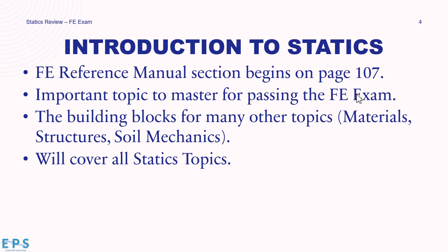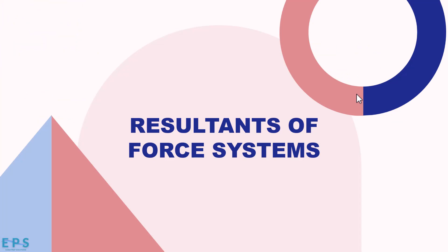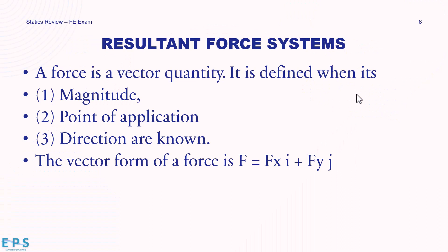We're going to cover all the statics topics here. If you have questions, leave them in the comments below. First, we're going to get into resultants of force systems. A force is a vector quantity, meaning it has direction and magnitude, and is fully defined when its magnitude, point of application, and direction are known. In vector form, a force is expressed with x and y direction components.